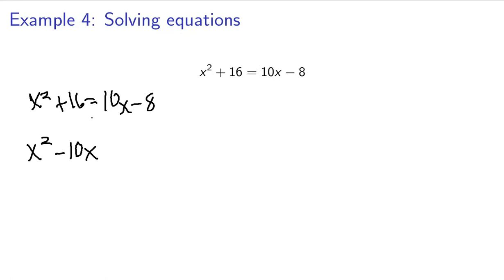I have like terms here, so 16 plus 8 will give us x squared minus 10x plus 24 equals 0. And now I can factor this out.